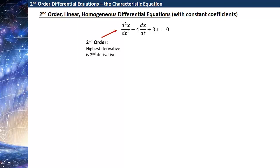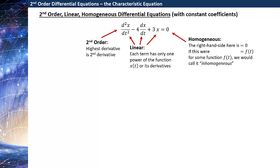So first, second-order refers to the differential equation having its higher derivative being a second derivative. Linear means that each term in the differential equation has only one power of the function x of t or its derivatives. Homogeneous means that the right-hand side of this differential equation is zero. If this were some function f of t, which doesn't multiply x, then we would call that inhomogeneous.